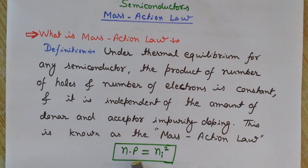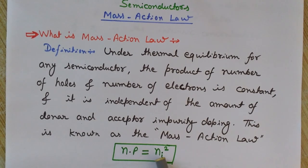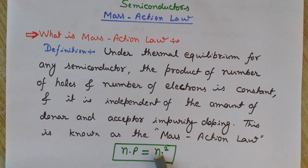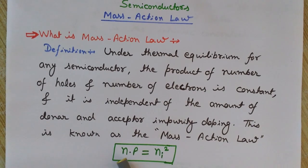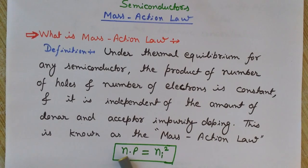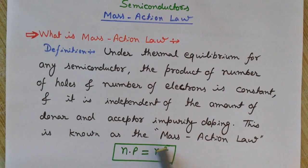This is the mathematical representation of the mass action law: the product of the number of electrons and the number of holes is constant, that is equal to ni squared, where ni is the intrinsic concentration. n and p are the concentrations of electrons and holes per unit volume. The product n × p always equals ni squared.